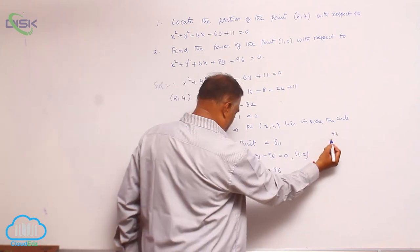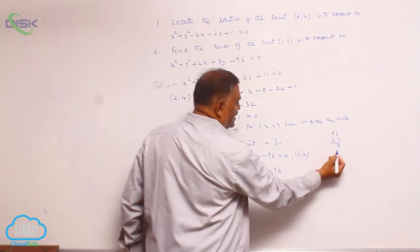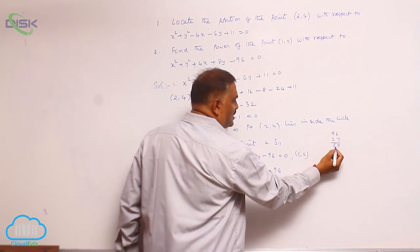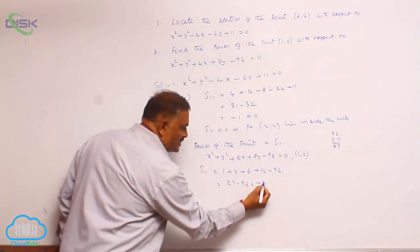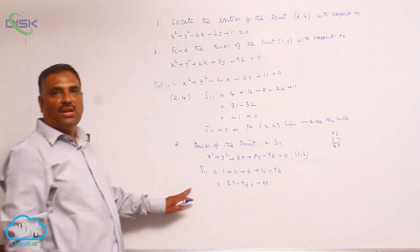You can take subtraction here. 27, I think it is 9. Then comes 8 minus 2 means 69. This is minus 69. S11 value is negative.